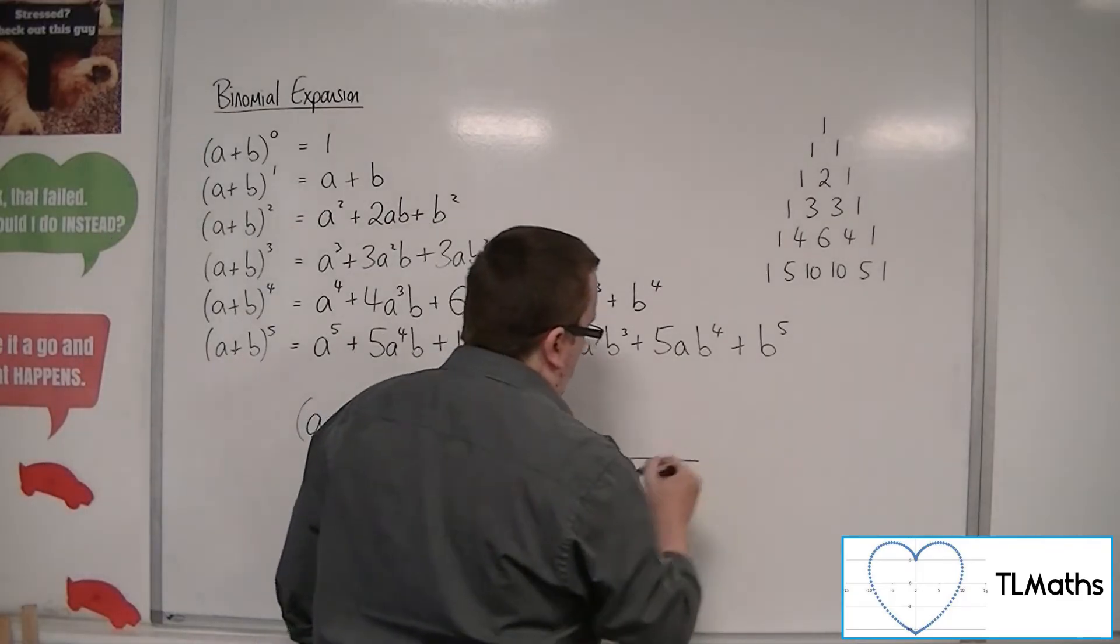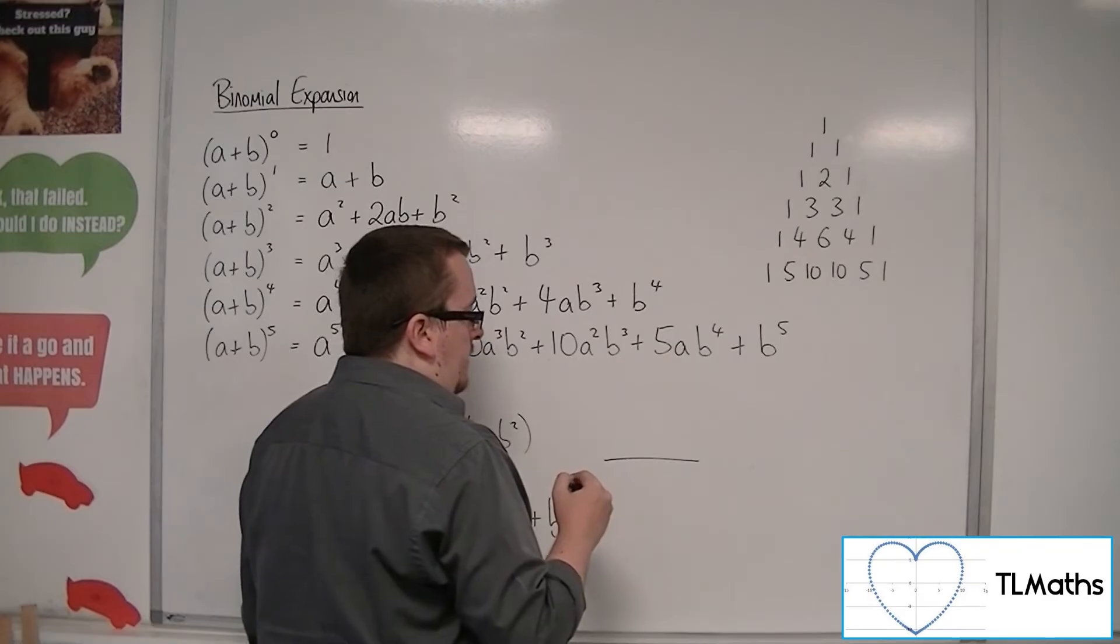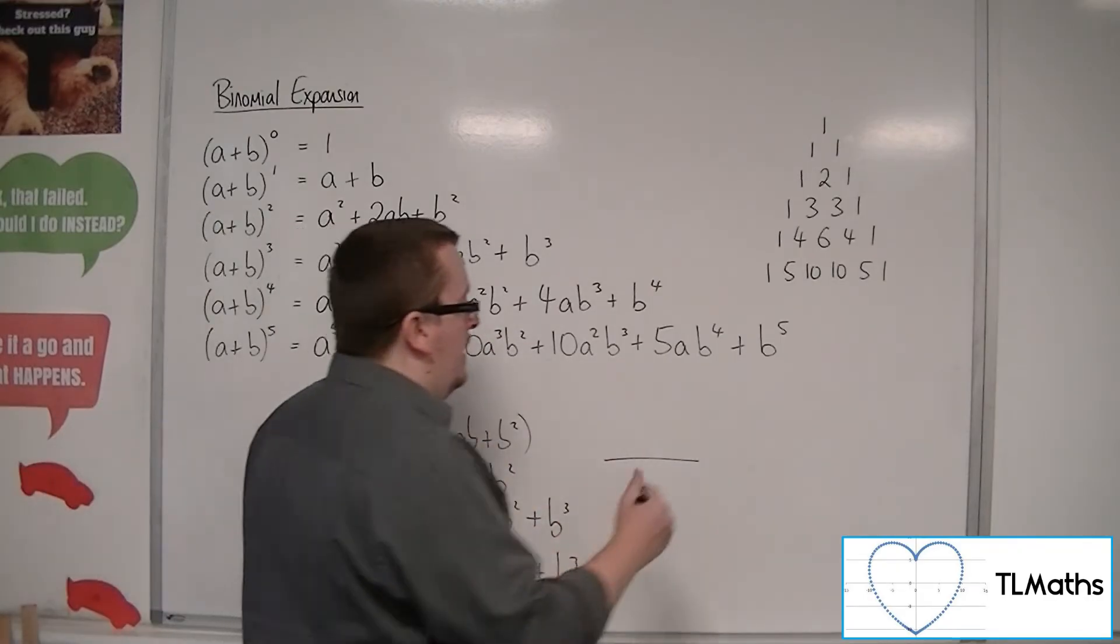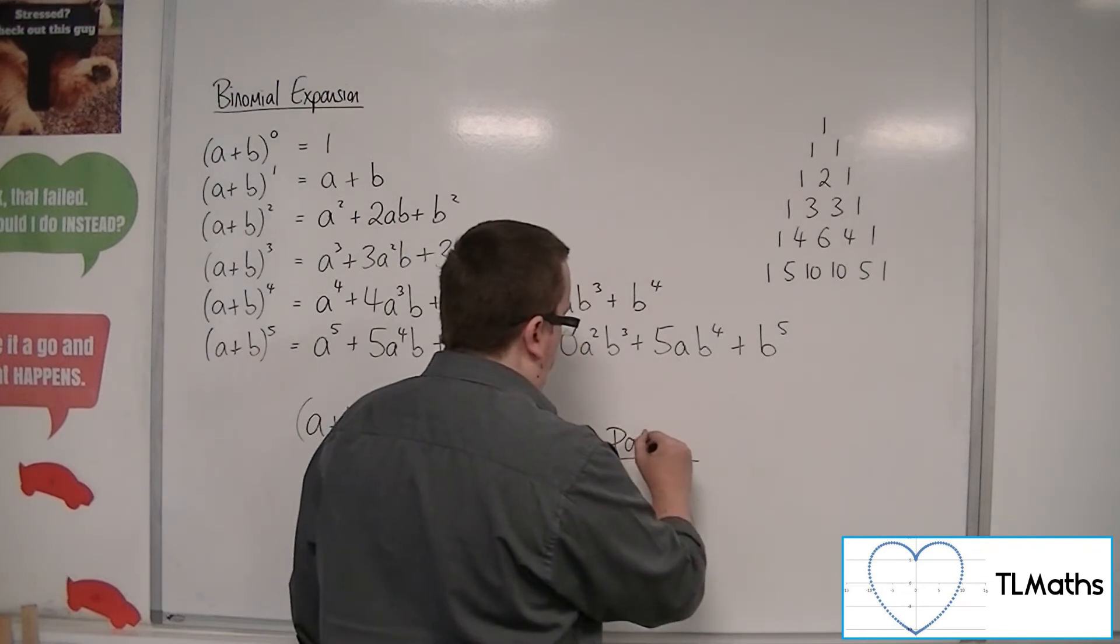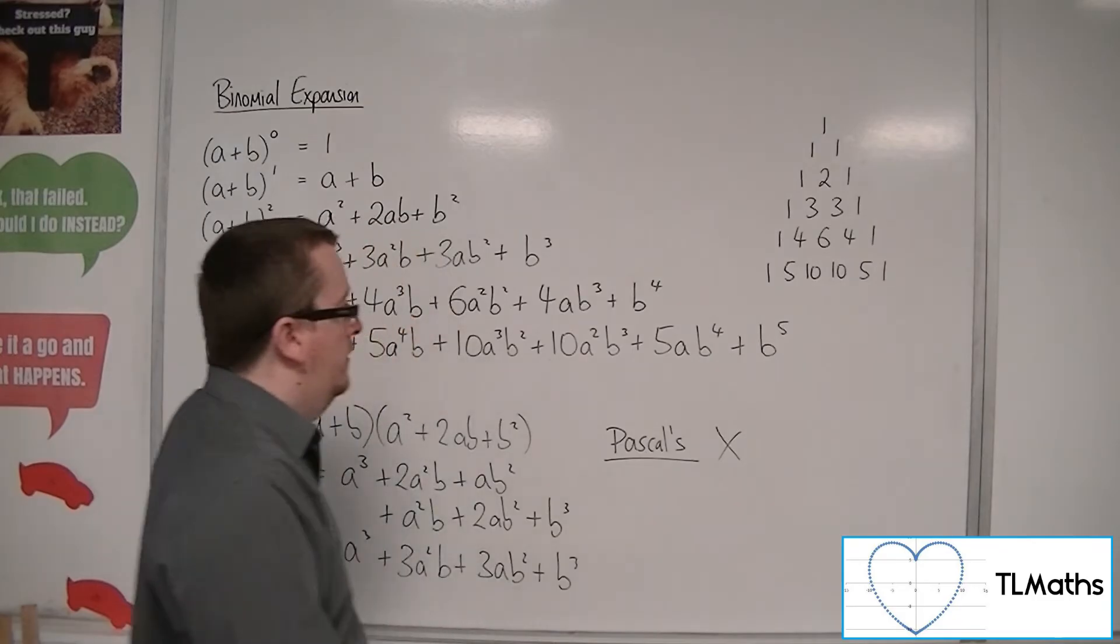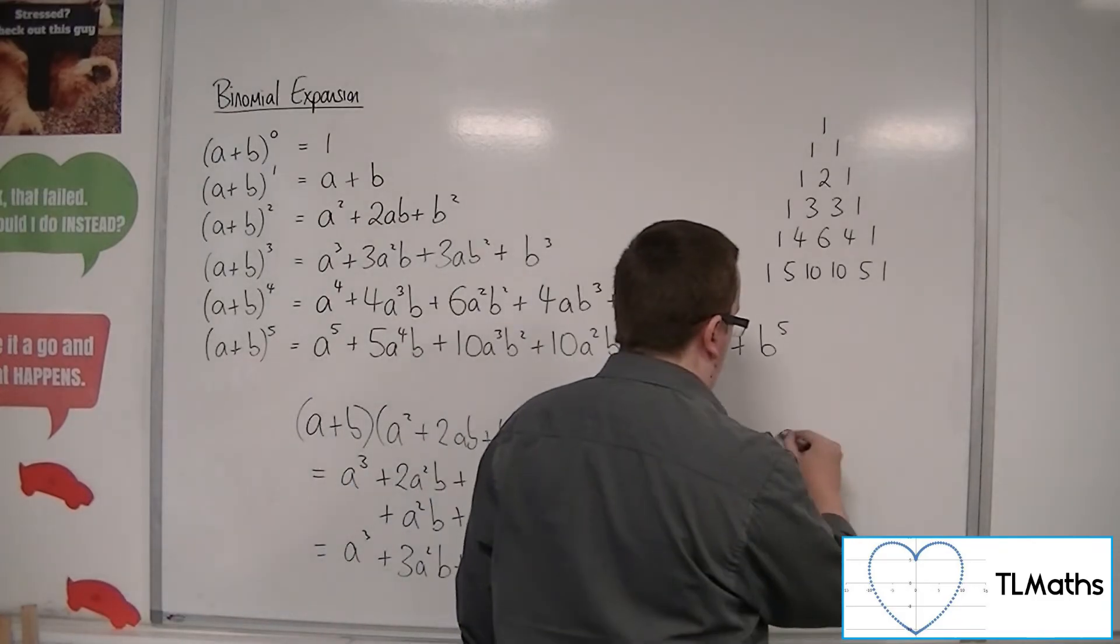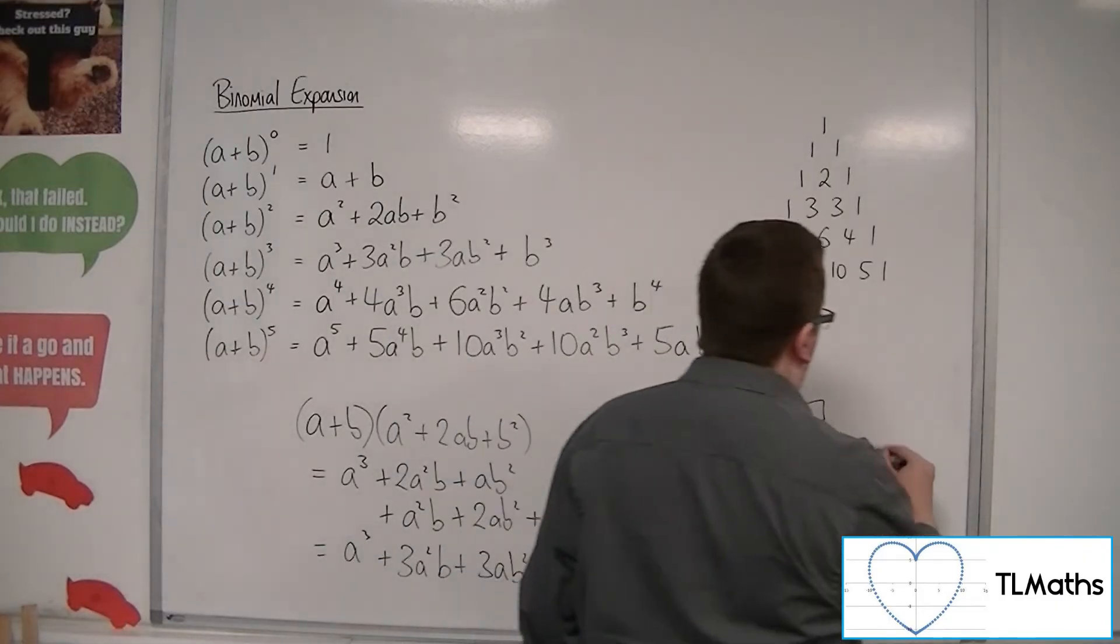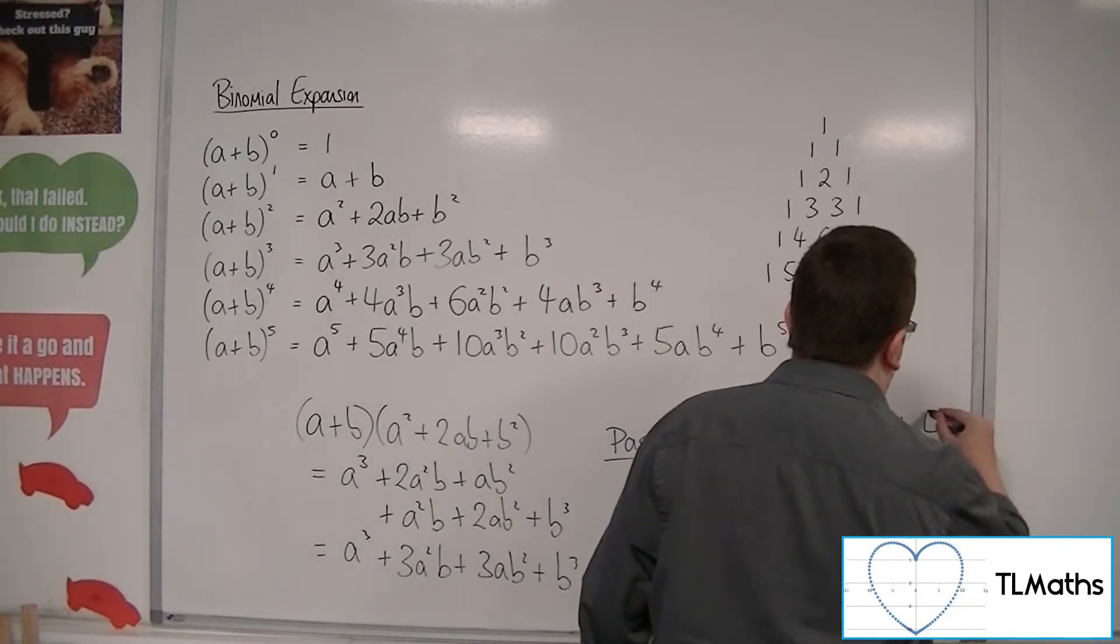Now what you should be seeing here with each of these terms is a situation where we've got the NCR formula. So Pascal's triangle, the element from Pascal's, times by A to the something, times by B to the something. So each of these elements have these three parts.